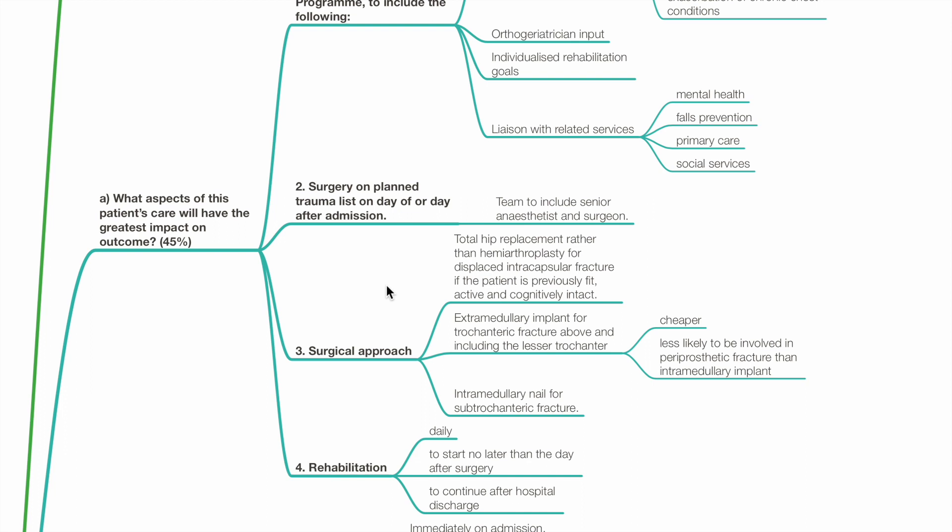Extramedullary implant for trochanteric fracture above and including the lesser trochanter, this is cheaper and less likely to be involved in periprosthetic fracture than intramedullary implant. Intramedullary nail for subtrochanteric fracture.